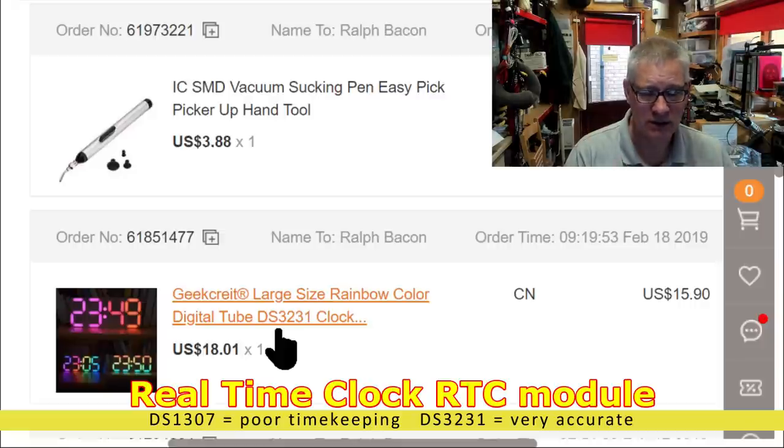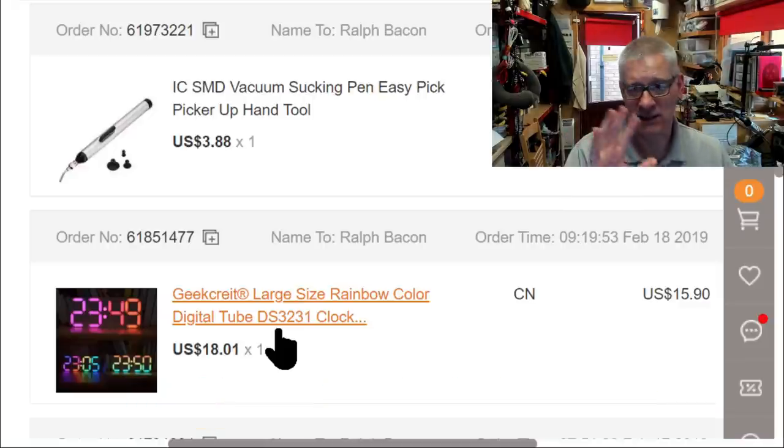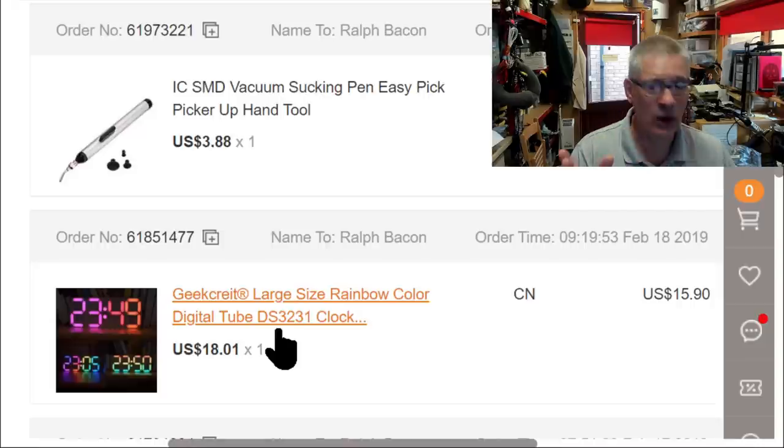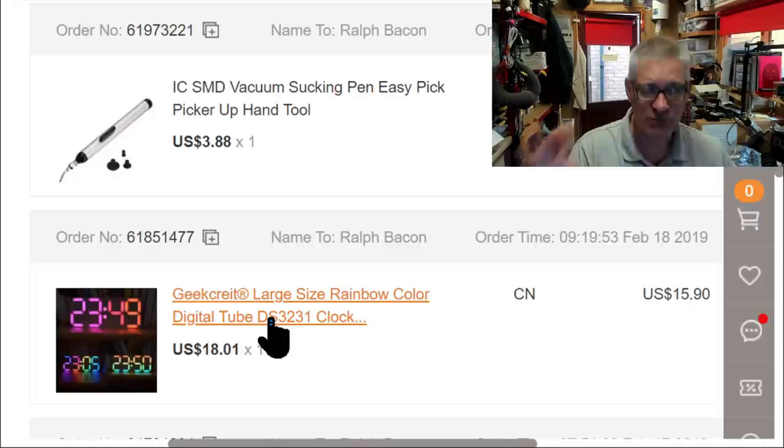If it had been anything less than that, I don't think I would have bothered. So a 3231, as you know, is much more accurate than other real-time clocks that you might want to buy. So you set it once, and it probably will keep the time excellently over several months. So that's one reason why I got this.